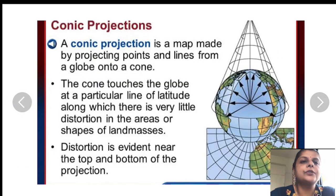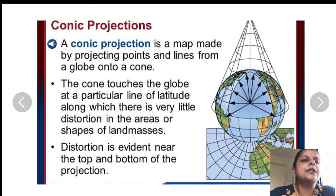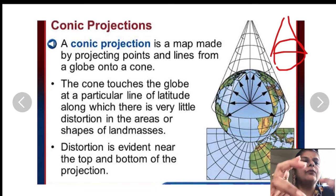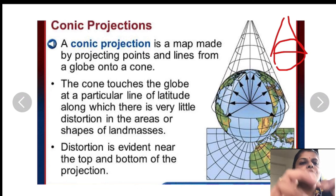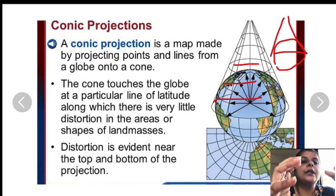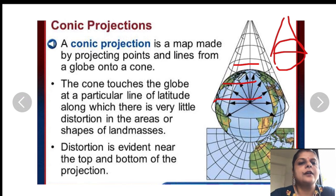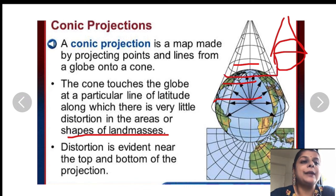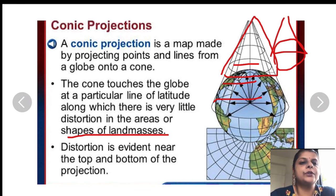After azimuthal projection, we have conical projection. A conical projection is made as if a cone is resting over a globe, as you can see here. The map is made by projecting points and lines from the globe onto a cone. Wherever the cone touches the globe along a particular latitude, there is no distortion or very little distortion in the shapes of landmasses. But as you move away from where the cone is touching the globe, the distortion increases.